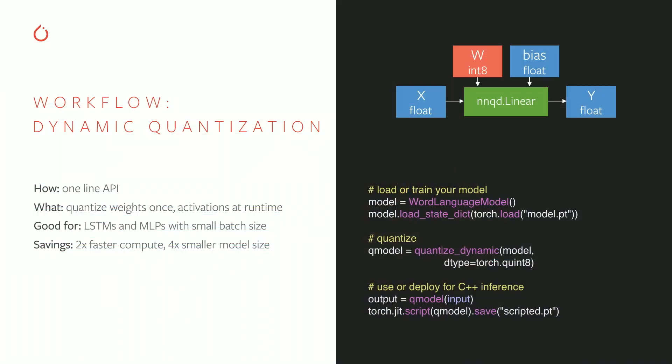Dynamic quantization is really a one-line API which you can apply to any PyTorch model or submodules with linear or RNN layers inside after it's been trained. Under the hood, we swap out the implementations of modules with their quantized versions, which convert the weights down to int8. The new model can be used directly for inference in Python, or it can be saved as TorchScript and used for inference in C++ on an embedded device.